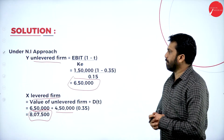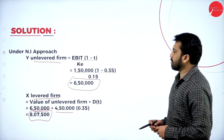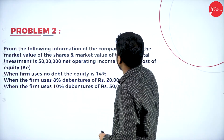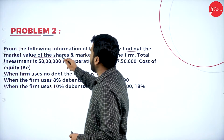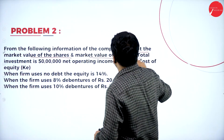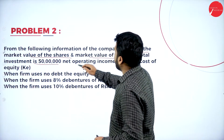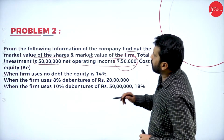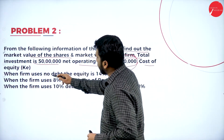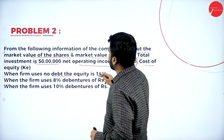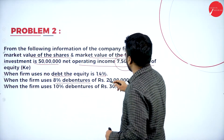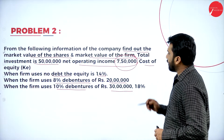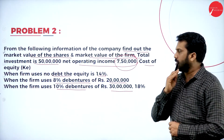Now Problem Number 2: From the following information, find the market value of shares and market value of the firm. Total investment is 50 lakh. Net operating income is 7,50,000. Cost of equity when the firm uses no debenture is 14 percent; when using 8 percent debenture of 20 lakh it is 16 percent; when using 10 percent debenture of 30 lakh it is 18 percent.